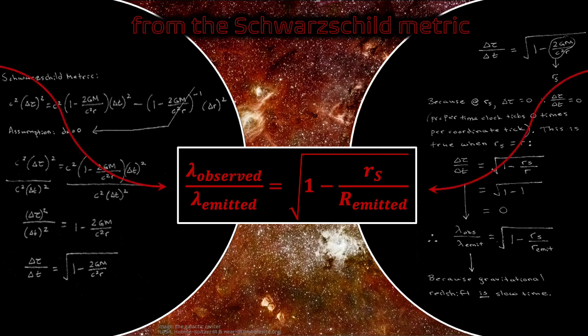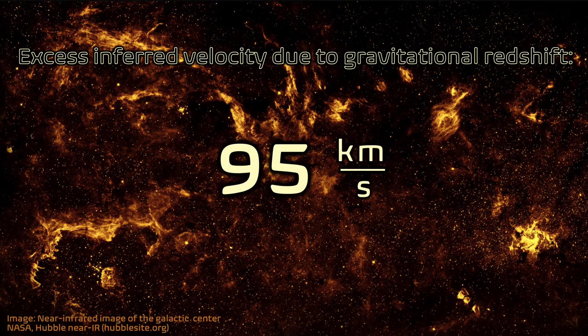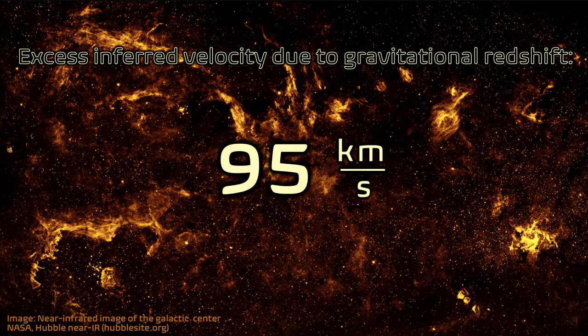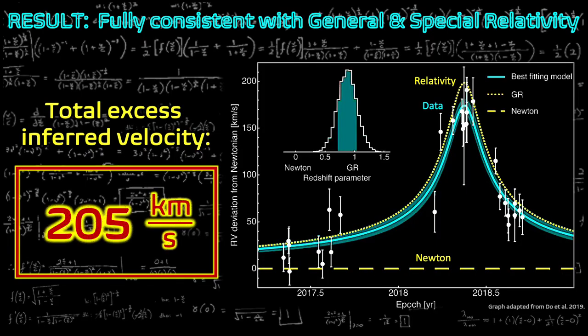I now have an equation for redshift and find gravitational redshift causes 95 km per second excess inferred velocity, for a total of 205 km per second excess when SO2 is near Sag A star.